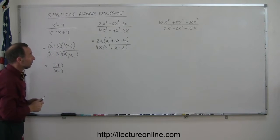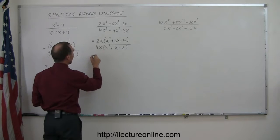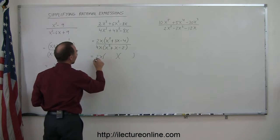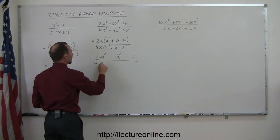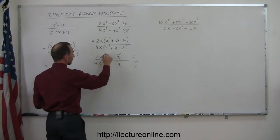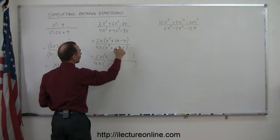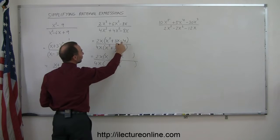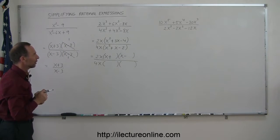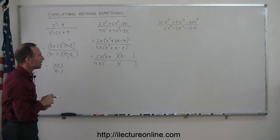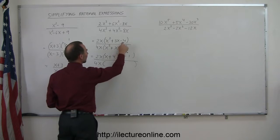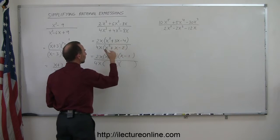Now, is what's in parentheses factorable? Let's try that. This is 2x times the product of two binomials, divided by 4x times the product of two binomials. In the numerator, I'm going to need an x and an x. One will be positive, one will be negative, because we have a negative and a positive — so a plus and a minus. When I multiply them I get -4, and when I add them I get +3. How about +4 and -1? Because -1 times 4 is -4, and 4 plus -1 gives me +3, so that's good.